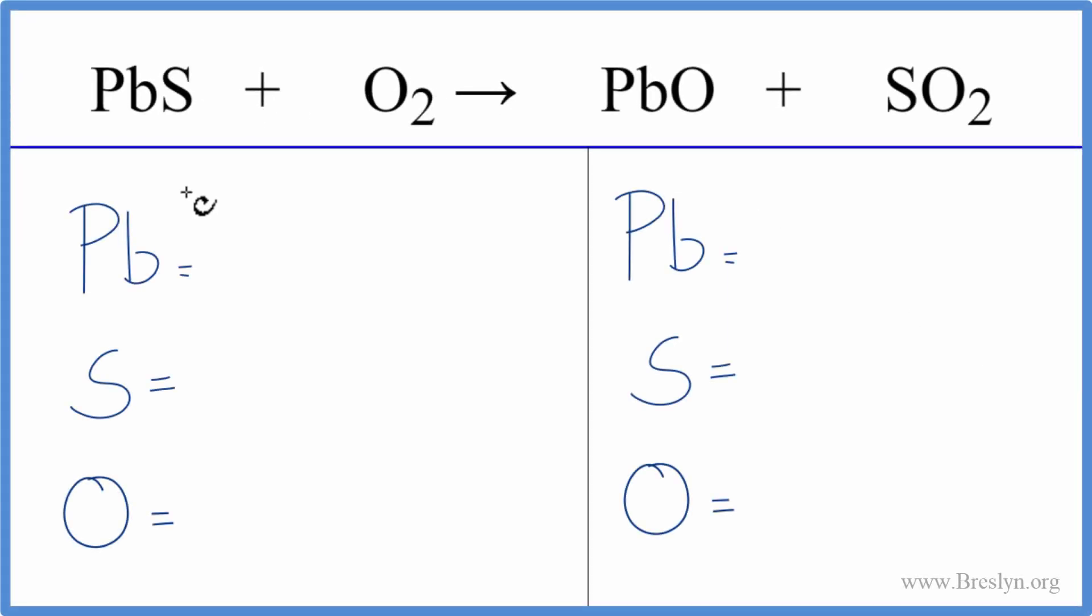This is an equation that's actually used industrially to produce PbO, lead oxide. To balance the equation, let's count the atoms up and see what happens. This reaction takes place at really high temperatures, about a thousand degrees Celsius.